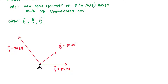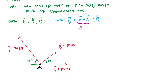Here's the system of forces: F1 is pointing horizontally, F2 is 40 kilonewtons at an angle of 45 degrees from the horizontal, and F3 is 70 kilonewtons at 55 degrees from the horizontal. I want to find the force resultant of all three vectors — essentially adding F1 plus F2 plus F3. Since the parallelogram law can only handle two forces at a time, I'll first focus on F1 plus F2, which I'll call FR prime.